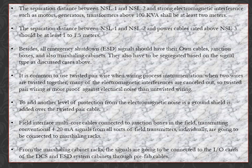Field interface multicore cables are connected to junction boxes in the field, transmitting conventional 4 to 20 mA signals from various field transmitters individually, and are connected to marshalling racks. From the marshalling cabinet racks, the signals are connected to the I/O cards of the DCS and ESD system cabinets through prefabricated cables.